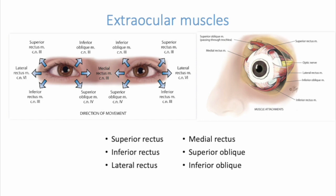We have six muscles that attach to each of our two eyeballs — attaching the eyeball to its orbit and directing the eye to different areas. They are responsible for straight movement and rotary movement, allowing you to look at different corners of vision. We have four straight or rectus muscles: superior, inferior, lateral, and medial rectus muscles. We have two slanting or oblique muscles: superior and inferior. Each muscle should be coordinated.